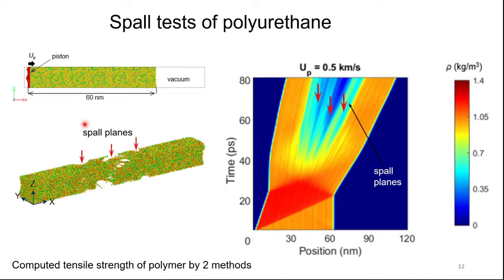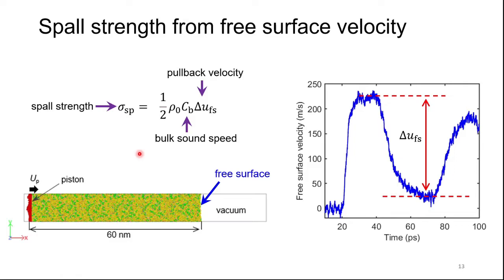We conducted spallation tests, in this case for polyurethane. This is the sample we used to simulate the spall test. We applied a particle velocity to the sample and observed spallation. The time-position plots of density help us identify spall planes — you can see there are three planes, and these correspond to the three planes shown in the sample. We computed the tensile strength, or spall strength, of the sample by following two methods.